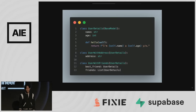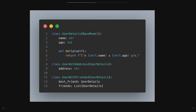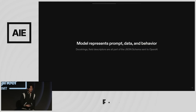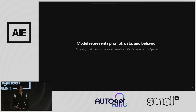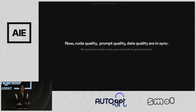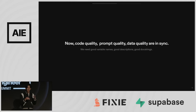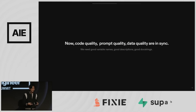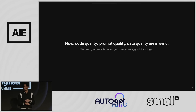You can add methods to a base model, define the same class with an address key, then define new classes like 'best friend' and 'friends' as a list of user details. Writing this as a JSON schema for a POST request would be very unmanageable, but this makes it a lot easier. When you have doc strings, those doc strings become part of the JSON schema sent to OpenAI. The model now represents the prompt, the data, and the behavior all in one — you want good doc strings, good field descriptors. Your code quality, prompt quality, and data quality are all in sync.